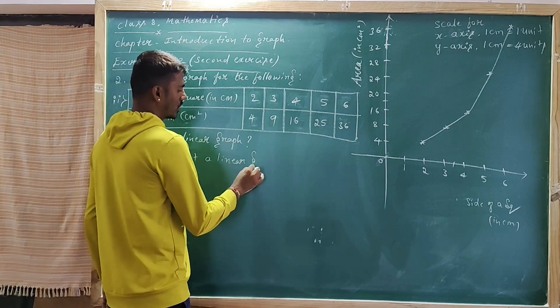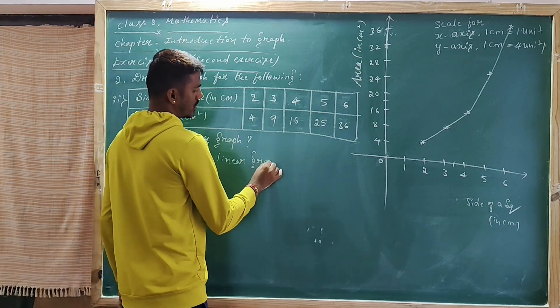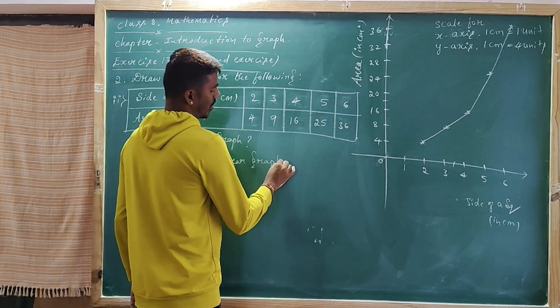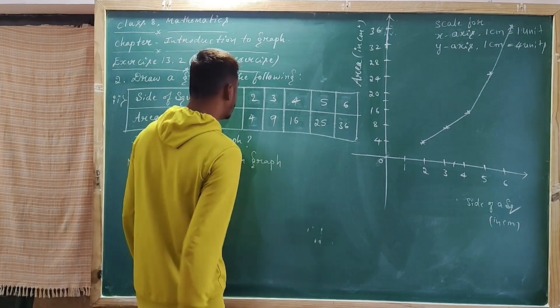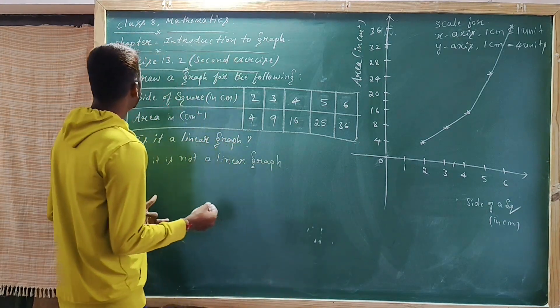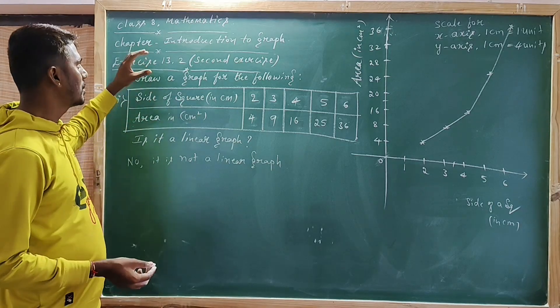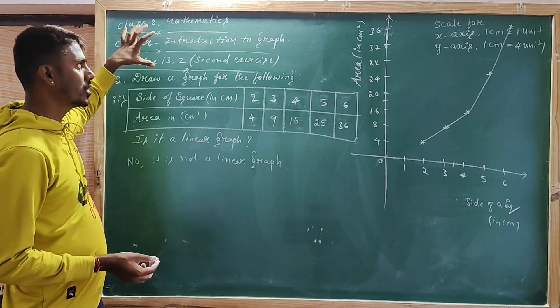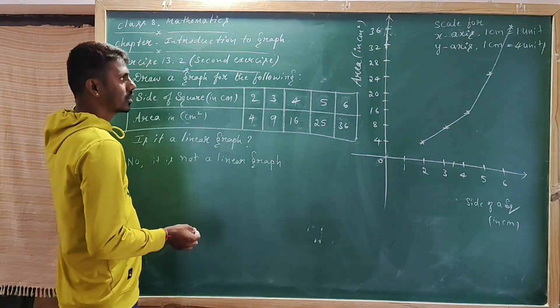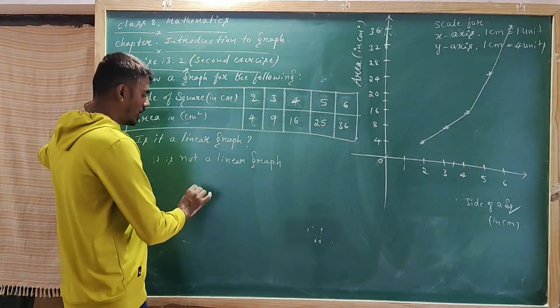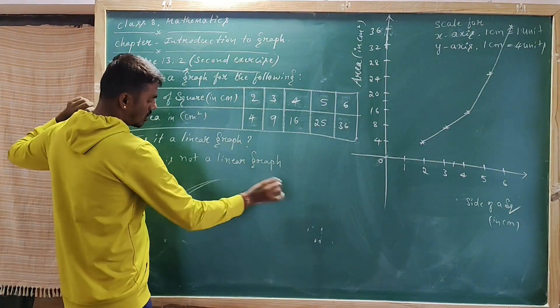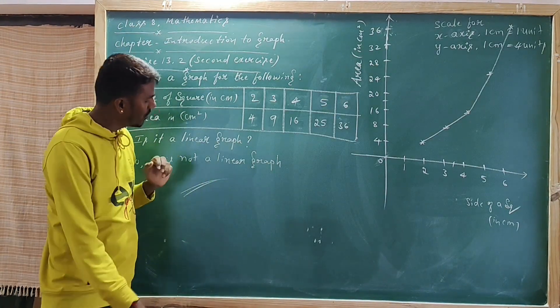Plot the coordinate points: (2, 4), (3, 9), (4, 16), (5, 25), (6, 36). Join all the points. Observe the graph — is it linear? No, it is not a linear graph. We have now completed the second exercise from the chapter Introduction to Graph.